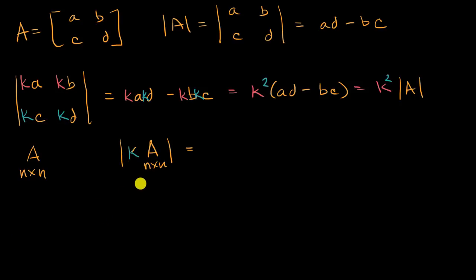You might be tempted to say it's K times the determinant of A, but remember, that's only if I multiply one row by K. But if I multiply the entire matrix by K, well then this determinant is going to be the constant K to the Nth power times the determinant of our N by N matrix A.